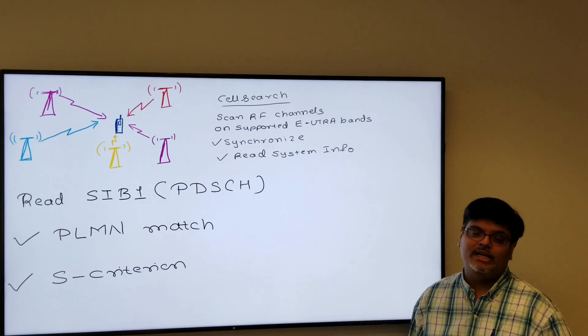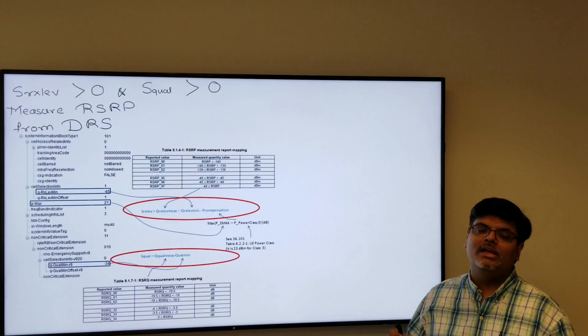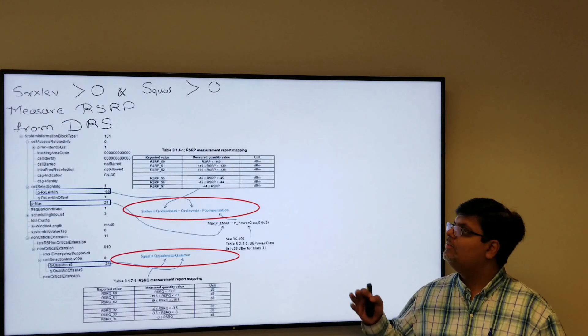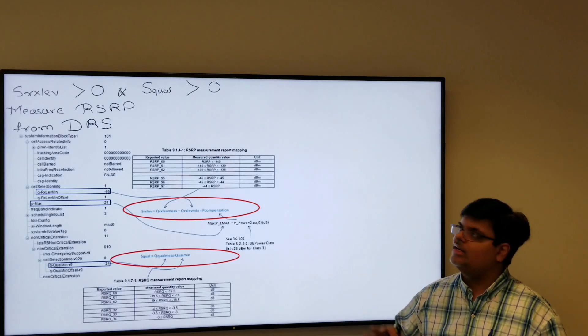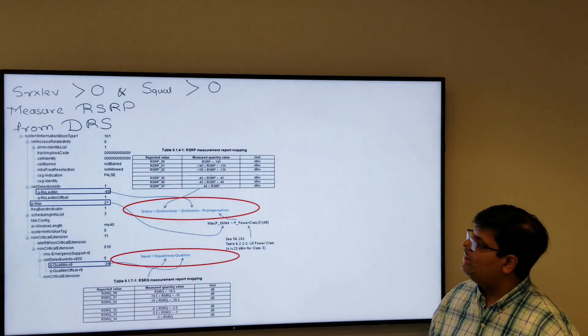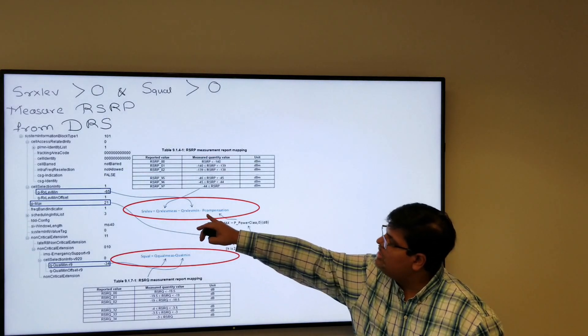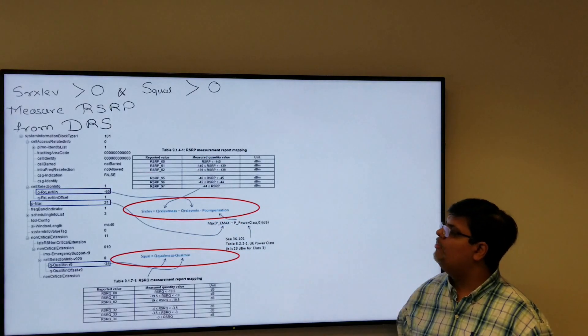What is S criteria? S criteria is basically SR receive level. Basically, S receive level should be greater than zero and S qual should be greater than zero. There is a formula like S receive level equals Q receive level measured minus Q receive level min minus P compensation.